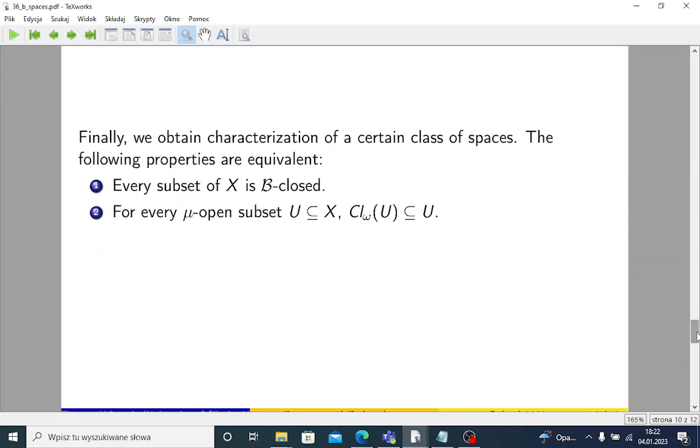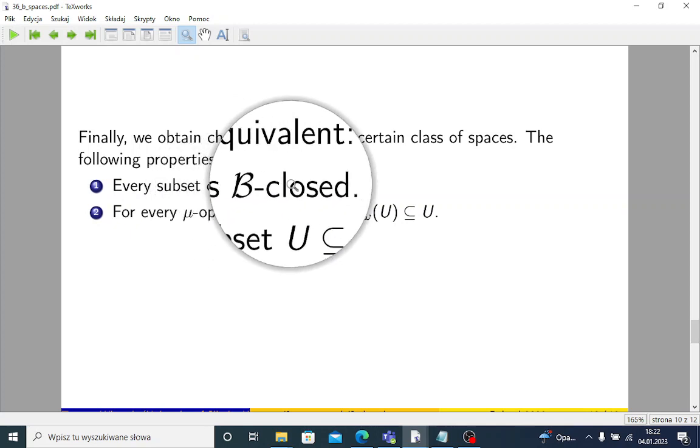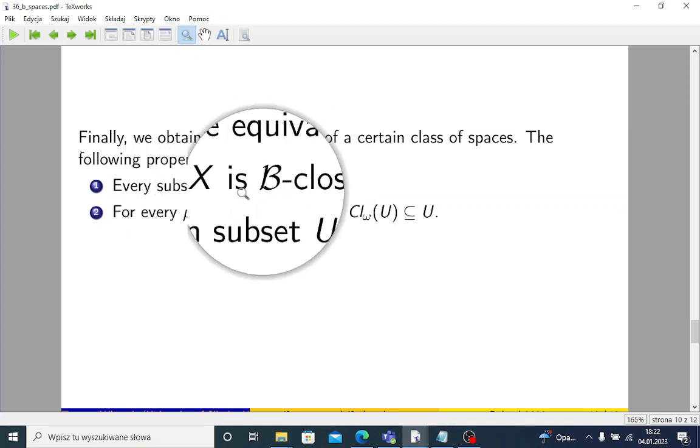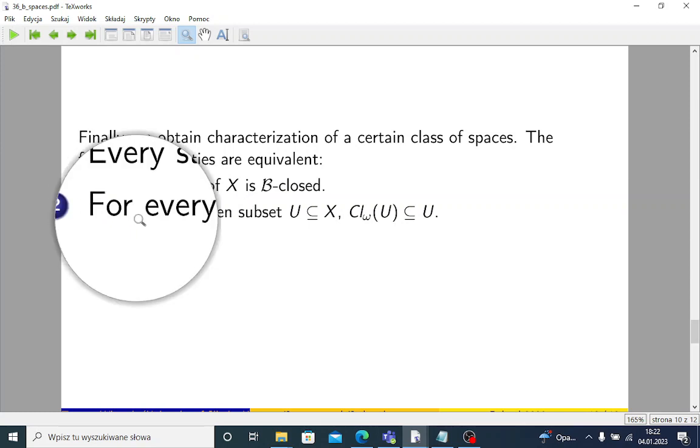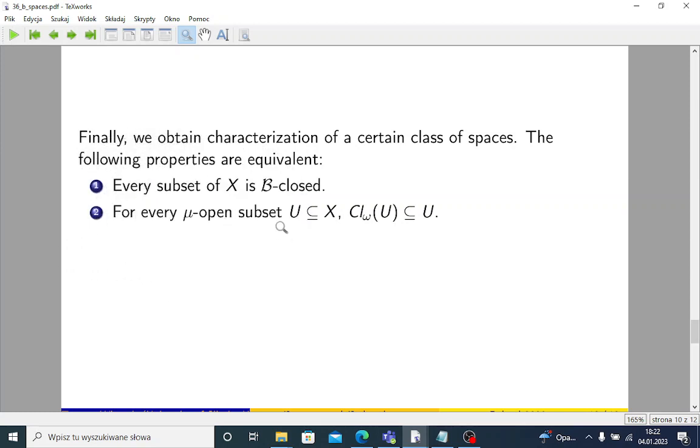Omega was our weak structure. Finally, we obtain characterization of a certain class of spaces, namely the following two properties are equivalent. Every subset of X is B-closed - every subset of our universe - if and only if, for every μ-open set, μ-open subset U, omega closure of U is contained in U.